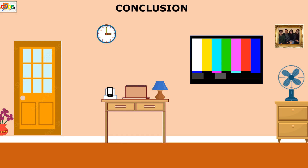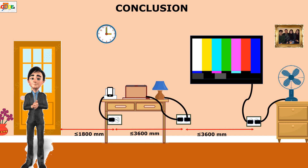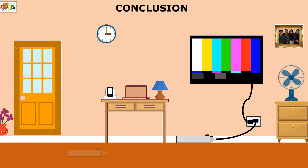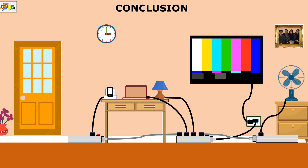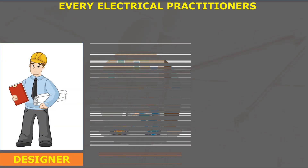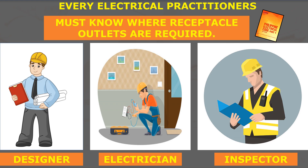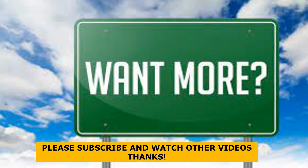In conclusion, receptacle outlet placement and spacing are key requirements of residential wiring. Outlet spacing affects the safety, convenience, and efficiency of your electrical system. If you only have a few outlets, you may end up using extension cords, power strips, or adapters, which can result in tripping hazards, electrocution, overloading, and fire hazards. Anyone who designs, installs, or inspects electrical systems in dwelling units must be thoroughly familiar with these requirements to protect people and property from electrical hazards. Thank you for watching. If you want to know more about required outlets and the electrical code, please follow my channel.